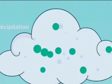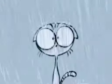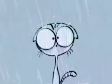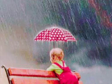When these drops of water vapor become big and heavy, they come down as rain. This is called precipitation.